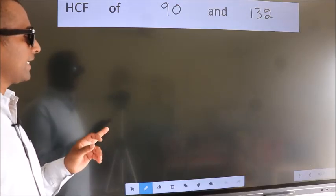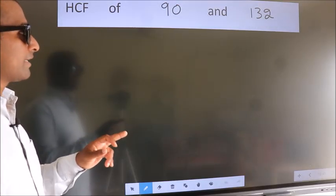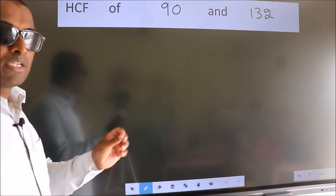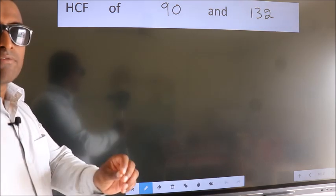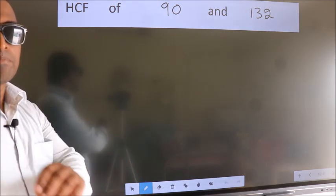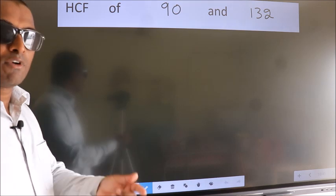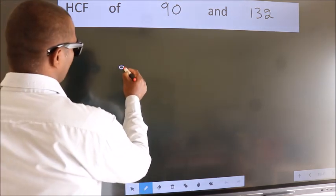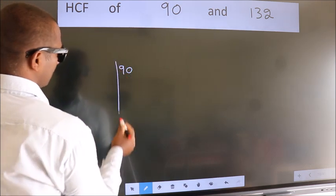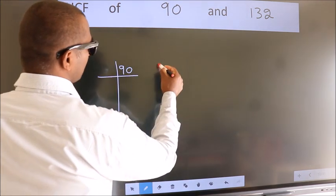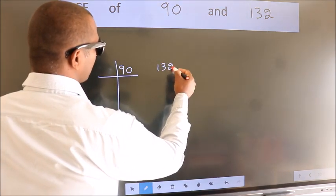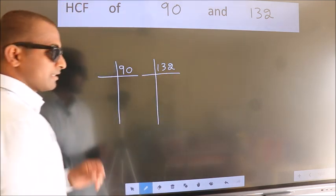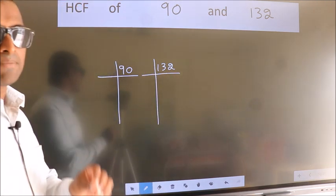HCF of 90 and 132. To find the HCF, we should do the prime factorization of each number separately. We write 90 here and 132 here. This is step 1.